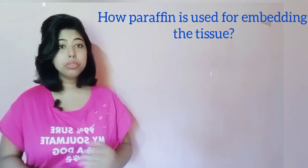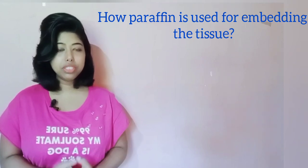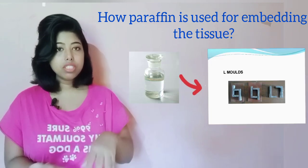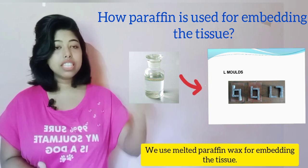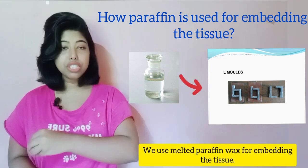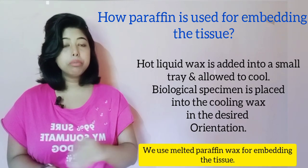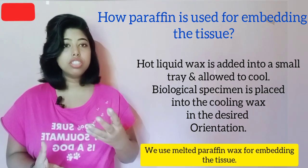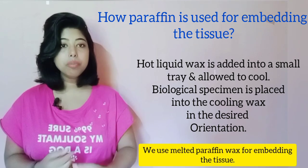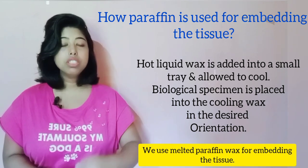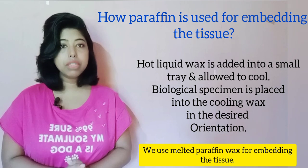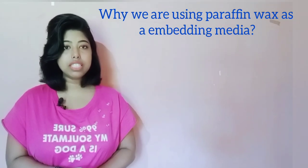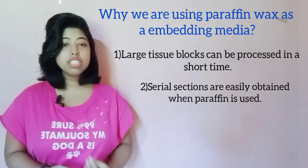Now we will see how paraffin wax is used for embedding the tissue. First, hot liquid wax is added to a tray — we will talk about the mold shortly. Hot liquid wax is added to a tray, the tray is allowed to cool, and the biological specimen or tissue is placed inside. The tissue gets proper orientation depending on the tray. Paraffin wax is used because large tissues can be processed in a short period of time. Paraffin is translucent, colorless, solid at room temperature, with a melting point of 45 to 60 degrees Celsius.